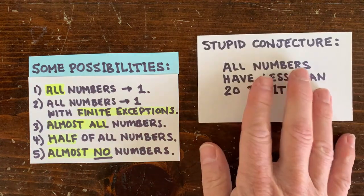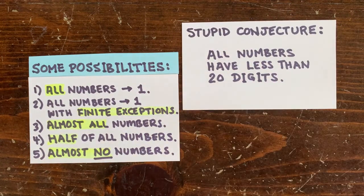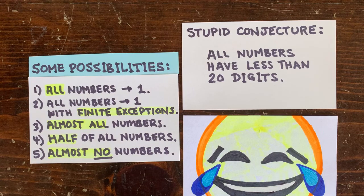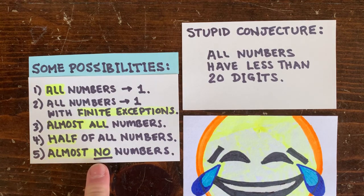Here's a totally different conjecture for example. All numbers have less than 20 digits. Well, you can try a billion billion numbers and they'll all satisfy the conjecture. But actually, almost no number has less than 20 digits.